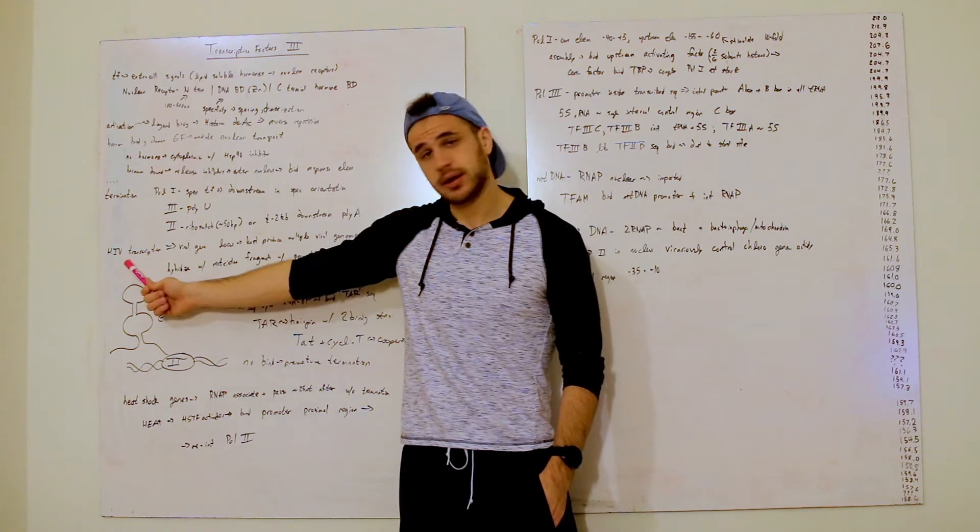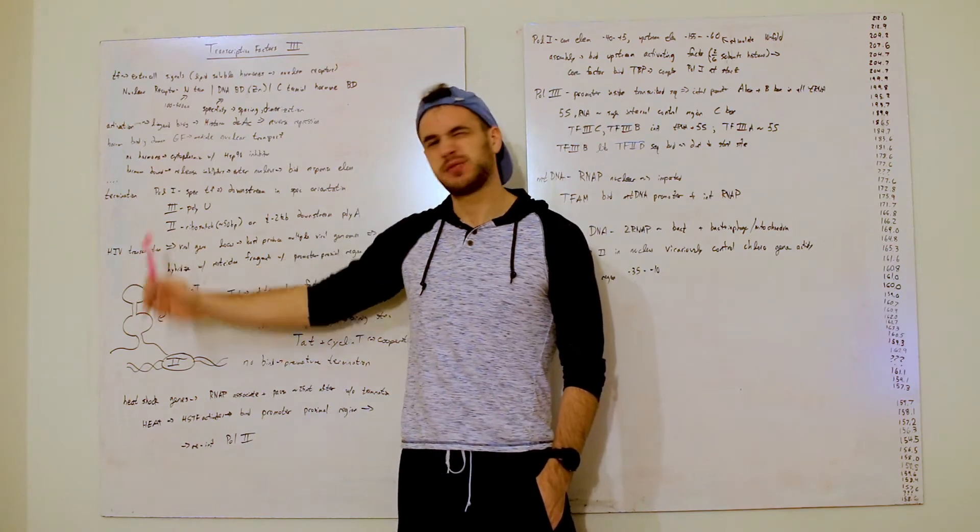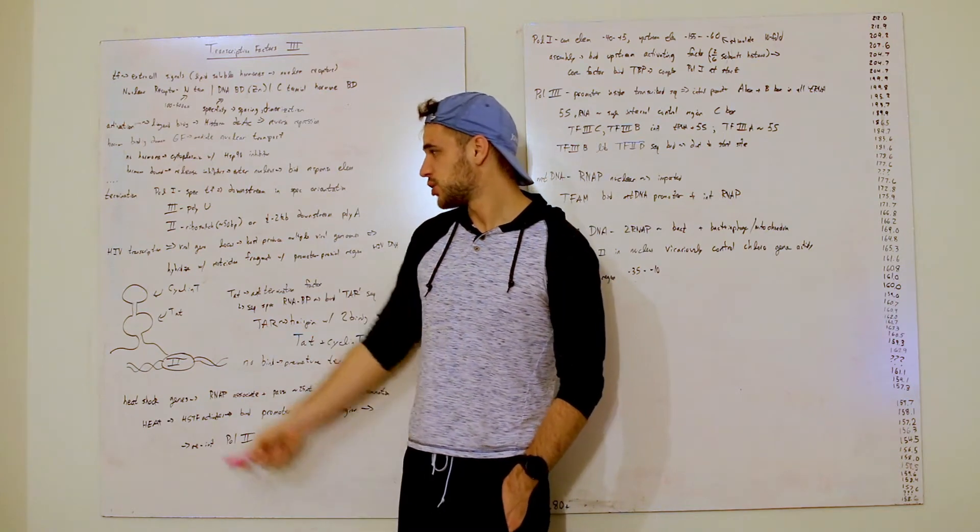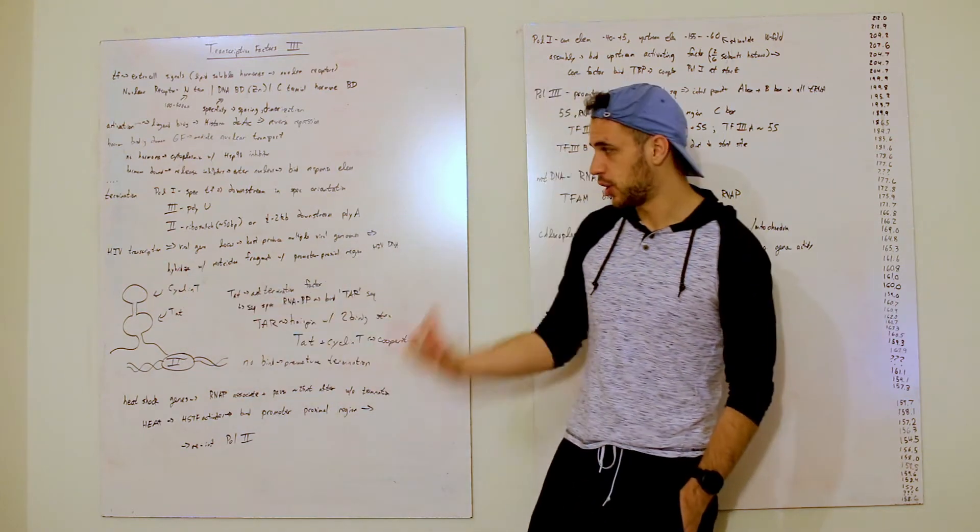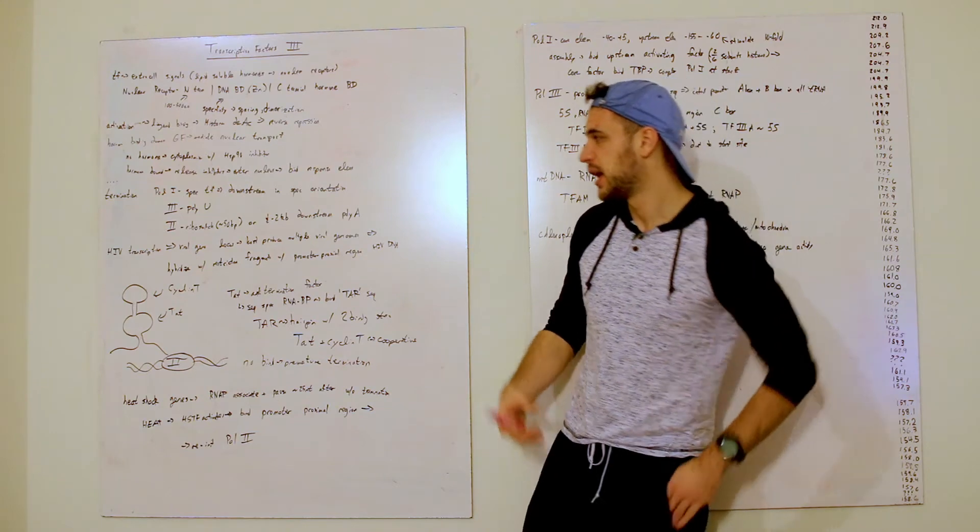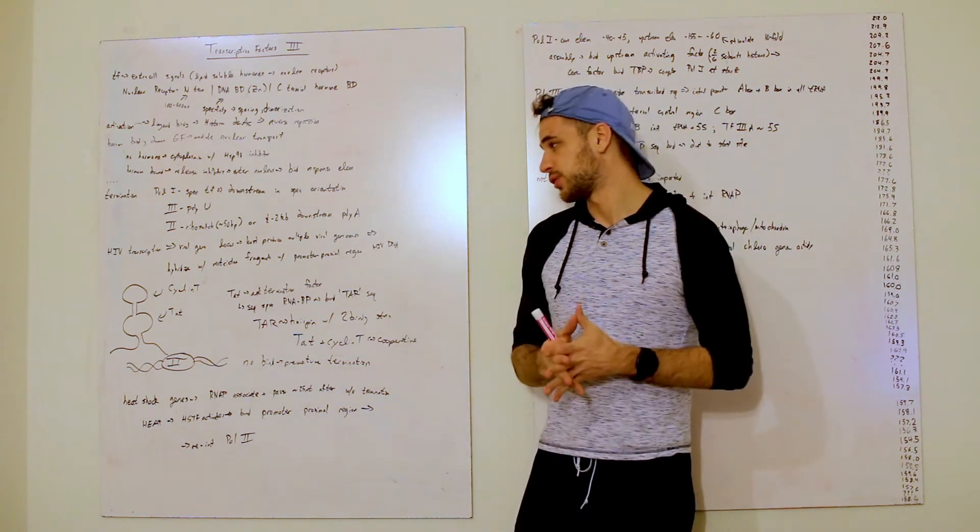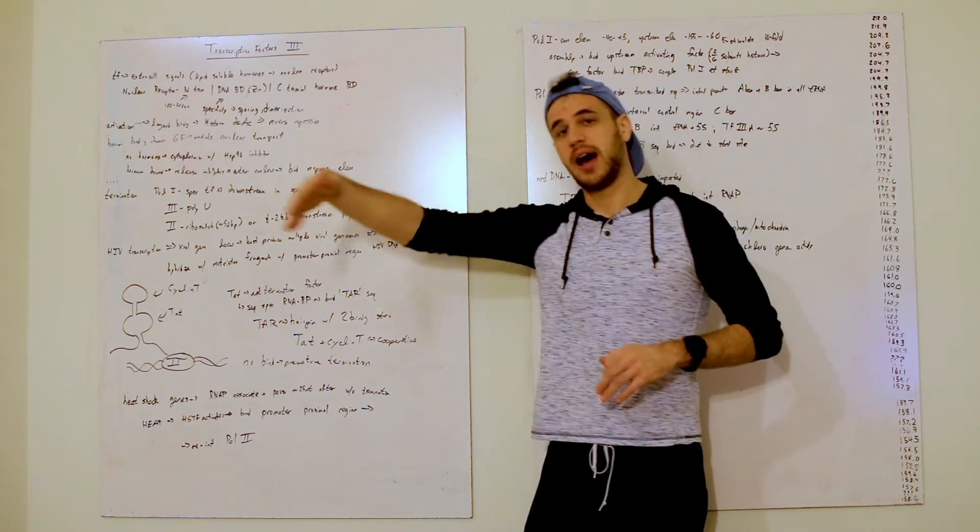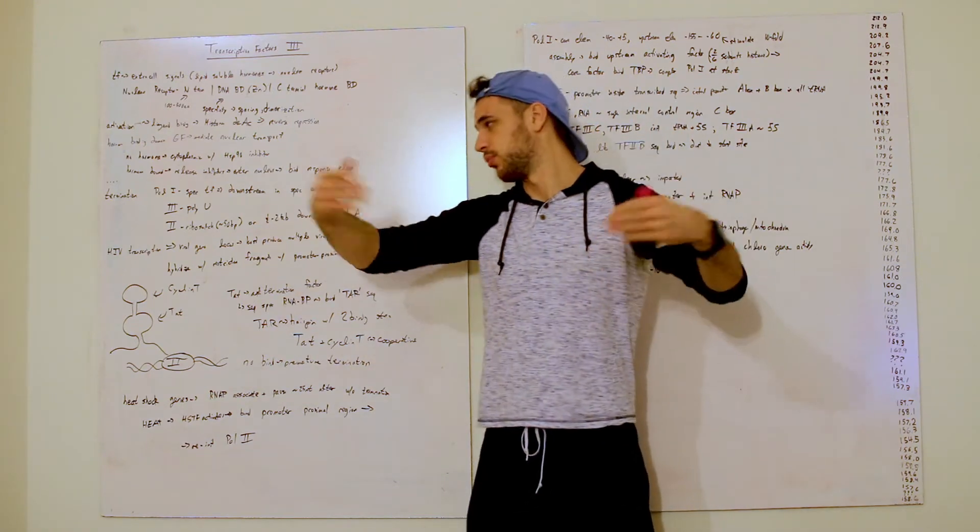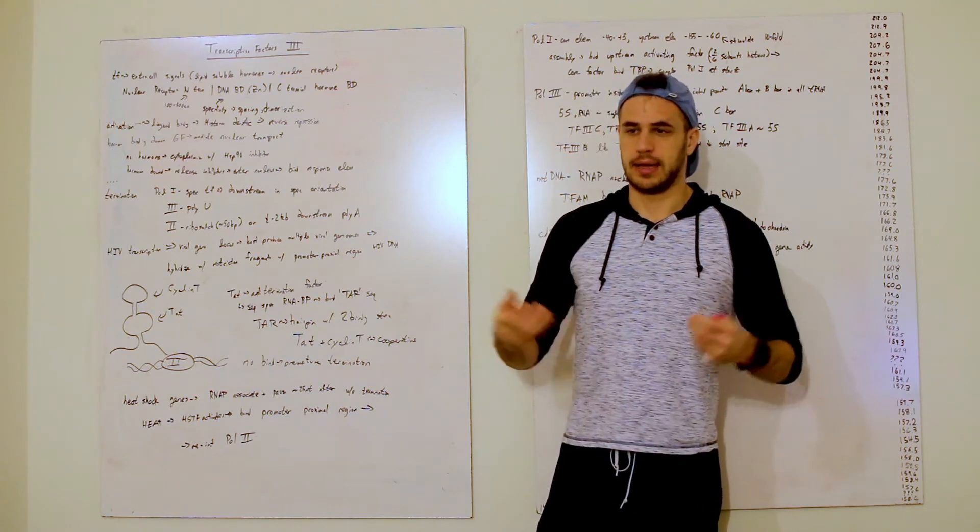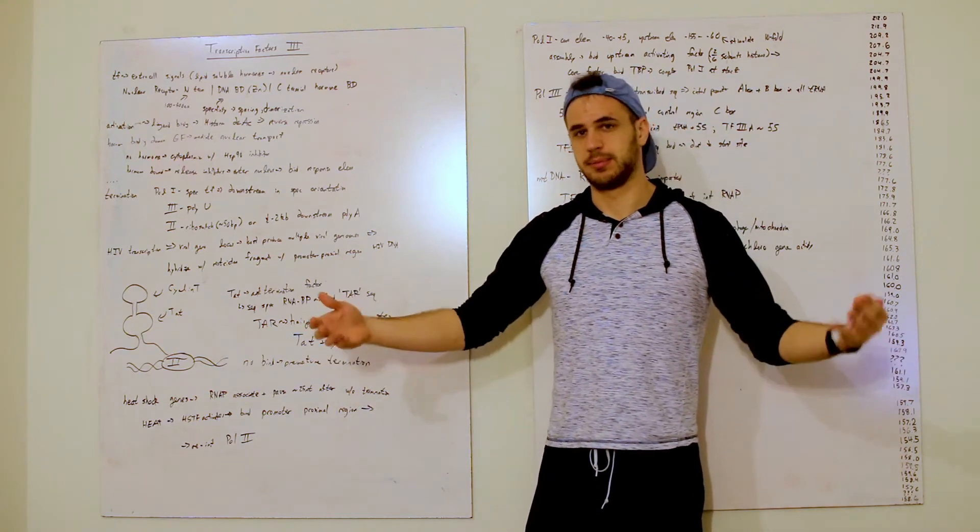So, now we're going to talk about HIV transcription, which is a very specific instance of a riboswitch, but it's also a very special instance of a riboswitch. So what happens is you have a viral gene locus with the HIV, produces multiple of the viral genomes, and then it'll hybridize reconstruction fragments in the promoter-proximal region of the DNA, and causing more and more genes, and causing the immune system to fail, and the patients to be deeply affected.